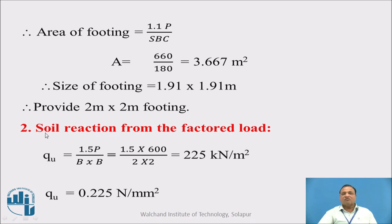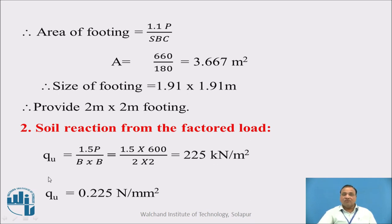Second step, we have to find out the soil reaction from the factored load. While finding the area of the footing, we have not taken the factored load — we have taken the given load as it is with self-weight of footing, because this is a serviceability condition and the factor for serviceability is only 1. So we have not multiplied load by 1.5. Whereas for design, soil reaction from the factored load is calculated as 1.5 times P divided by B squared, that is 1.5 times 600 divided by 2 m by 2 m, giving 0.225 N/mm² as the upward pressure.